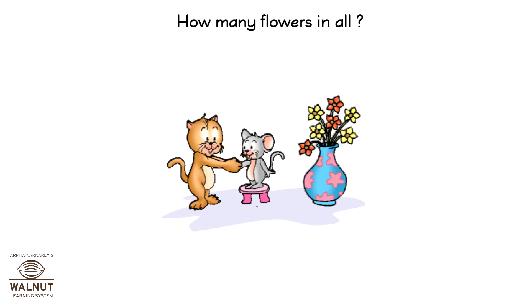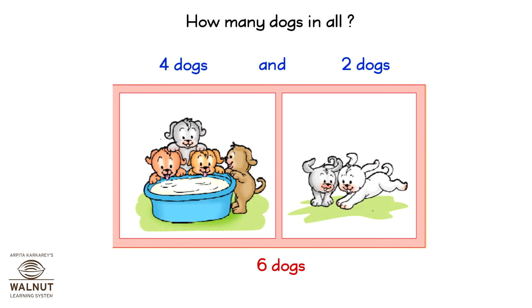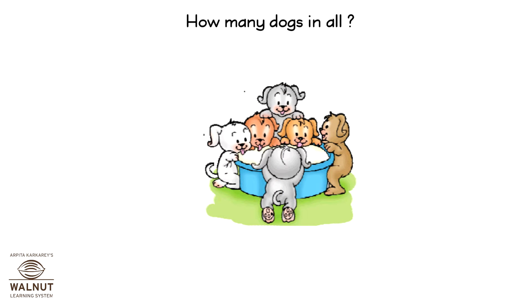How many flowers in all? Seven flowers. Four dogs and two dogs is six dogs. How many dogs in all? Six dogs.